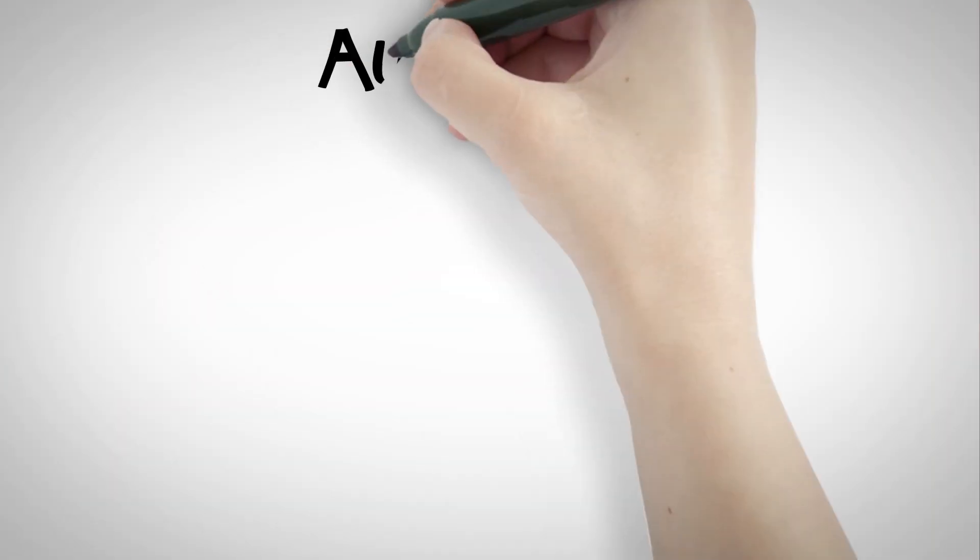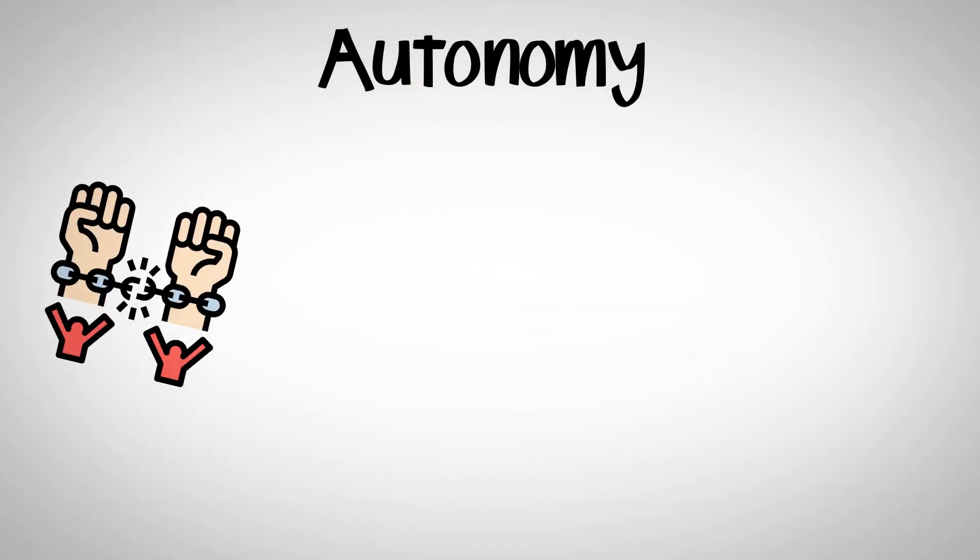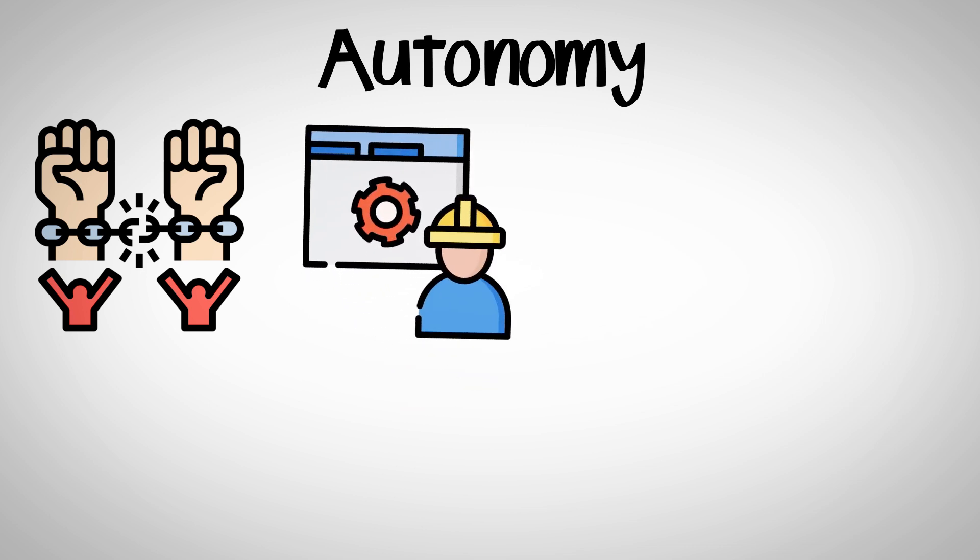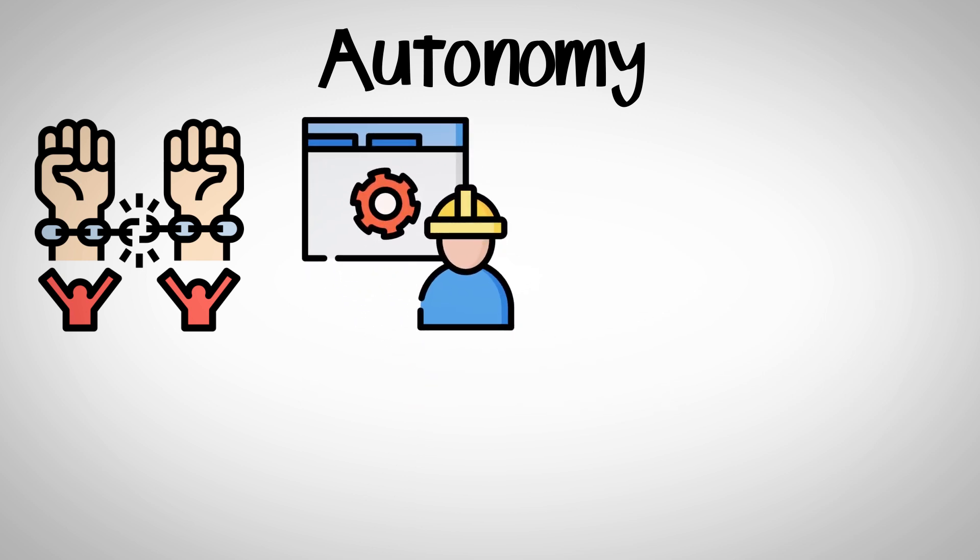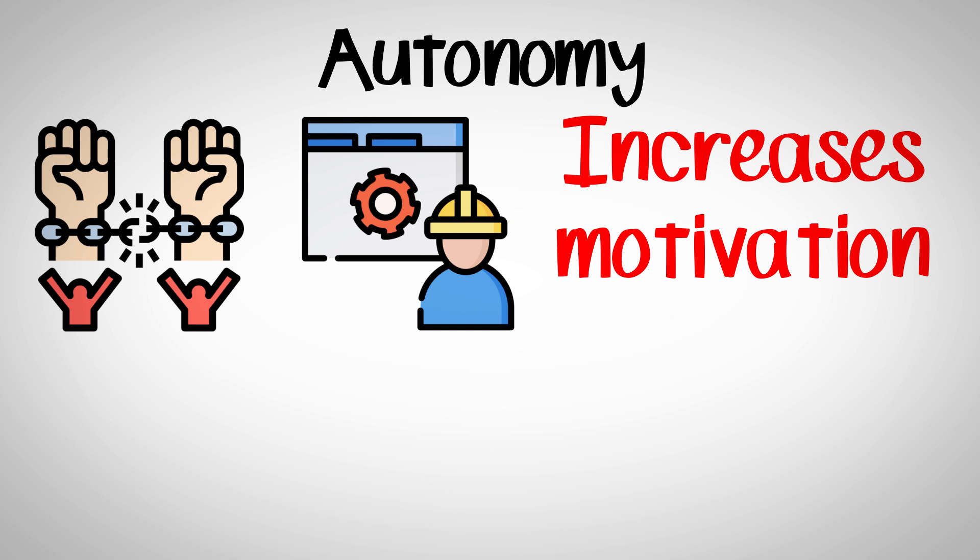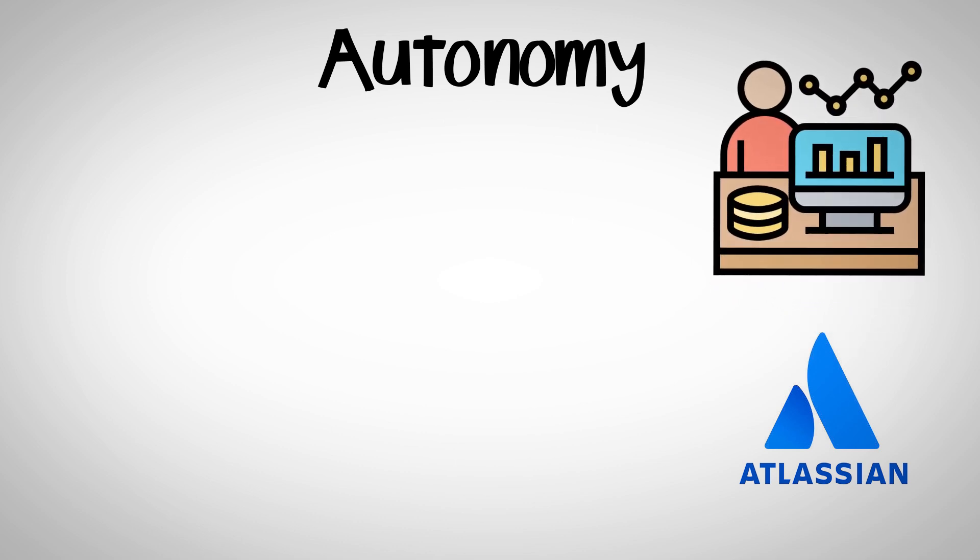Number one is autonomy. Autonomy basically means independence. Research has shown that when employees are actually given independence in their work, they actually are more intrinsically motivated. For example, there was an Australian software company called Atlassian that used this in the best way possible. A lot of companies offer monetary reward to their employees to solve big problems. But Atlassian didn't do any of that.